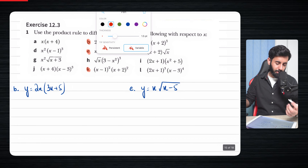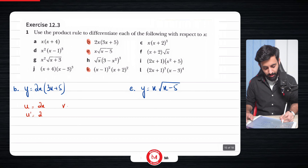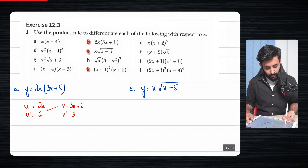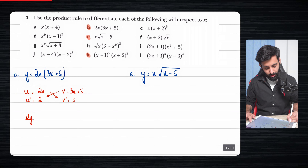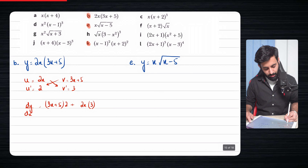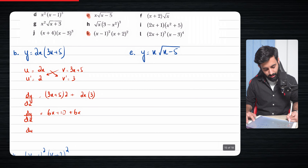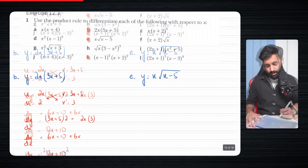So u equals 2x, which means u prime equals 2. v equals 3x plus 5, which means v prime equals 3. So dy/dx equals v·u′ plus u·v′, which is (3x+5)·2 plus 2x·3. That gives us 6x plus 10 plus 6x, so the answer is 12x plus 10, which is correct.